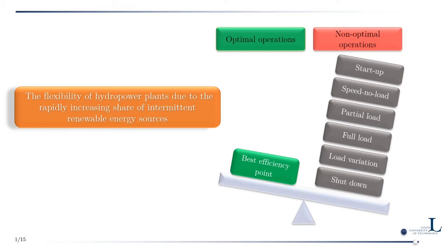Hydraulic turbines are designed to operate at a certain operating point for a specific head and discharge, known as the best efficiency point. However, due to grid demands, off-design operation — ranging from startup, spin no-load, part load, full load, different load variations, stops, and runaway conditions — has increased. There is therefore an obvious need to predict load fluctuations during off-design conditions, particularly on runner blades, to prevent harmful operating points and predict the refurbishment period of turbine runner blades.